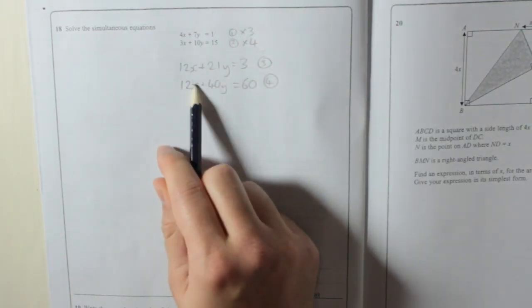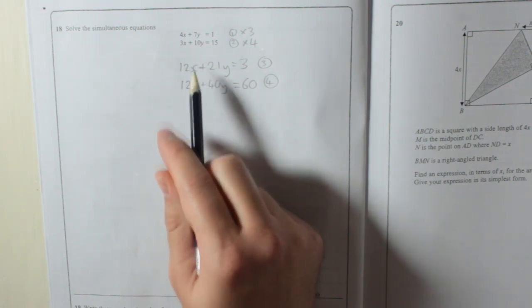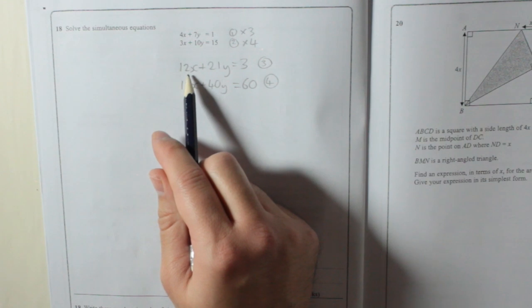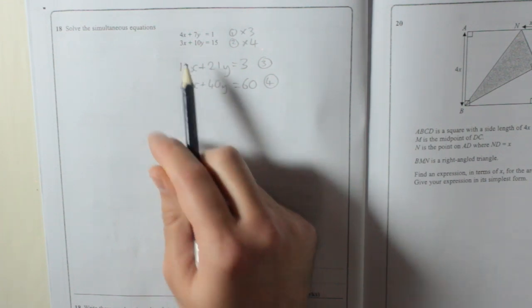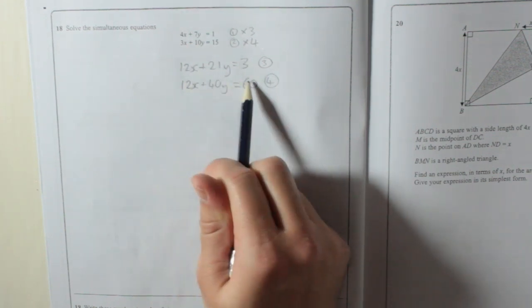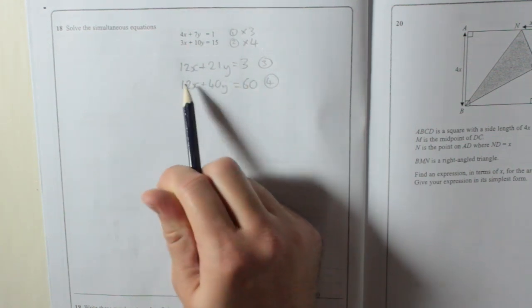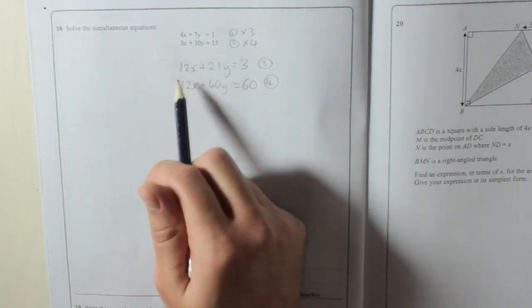Now I've matched up the same number of x's, so all I need to do is eliminate them. Usually to eliminate them, you either subtract one from the other or add them together. If I add equation 3 to equation 4, I'll end up with 24x, so that's not going to get rid of them. I've got to subtract one from the other.